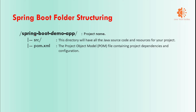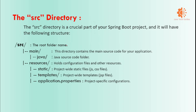Let me give an example of a project like a Spring Boot demo application. Under that project we will have one folder and one file: the SRC folder and the pom.xml file. The SRC folder will have all our Java source codes and resources like JS, JSP, and configuration files. The pom.xml is the Project Object Model file for Maven, which will contain all the project dependencies and configurations.